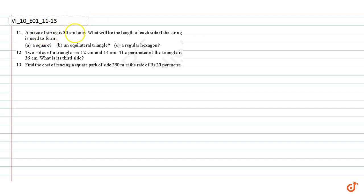A piece of string is 30 cm long. What will be the length of each side if the string is used to form a square, an equilateral triangle, or a regular hexagon?